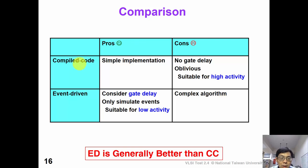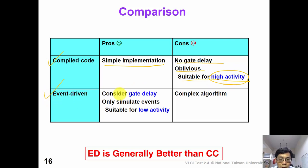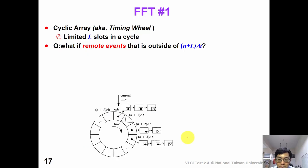Now let's compare compile code and event-driven simulation. Compile code is simple to implement, but it does not consider gate delay and it is oblivious — that means we forget all the previous simulation results, so every time we need to do a simulation all over again. This is suitable for simulation with high circuit activity. The other one is the event-driven simulation, which considers gate delay and we only simulate events when they occur. So it is suitable for circuits with low activity. However, the algorithm is more complicated to implement. In general, event-driven simulation is better than compile code simulation.